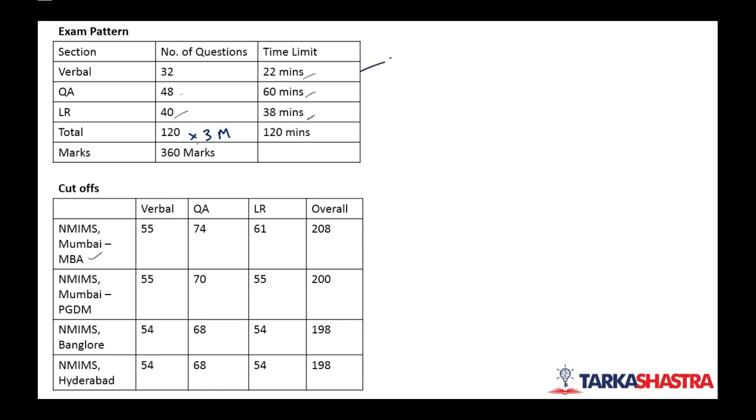Verbal section will have RC questions some 8-12 RC questions. Then some 10 odd grammar questions. Some 7-8 questions on verbal logic. What is verbal logic? Verbal logic means your parajumbles, critical reasoning, statement assumption, statement conclusion and all these, and some 2-3-4 questions on vocabulary like synonym and antonym, fill in the blanks.